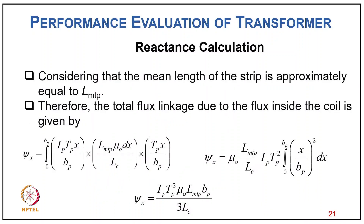Considering the mean turn length of the strip approximately equal to LMTp, the total flux linkage due to flux inside the coil is obtained by integrating from 0 to bp: ψ = μ₀×LMTp/Lc × Ip×Tp² × ∫₀^bp (x/bp)² dx, giving ψ = Ip×Tp² × μ₀×LMTp×bp / (3Lc).